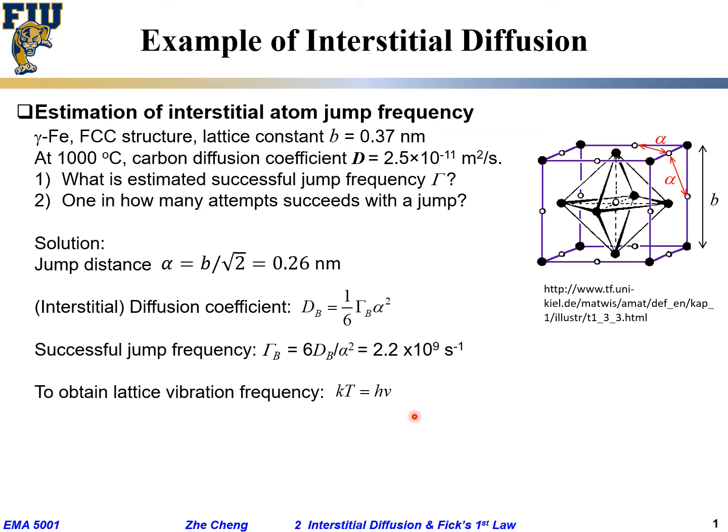ν is your vibration frequency. When you vibrate, what's your total energy? It's your vibration frequency times a Planck constant. That gives you your thermal energy. k do we know? Boltzmann constant. T is your temperature.